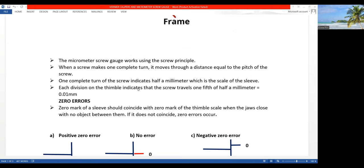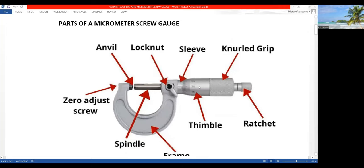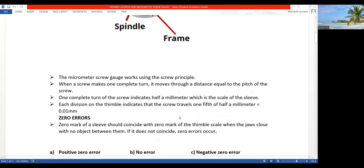Its division on the thimble. On the thimble, let me take you back here. Which one is the thimble? It's this one here. Its division on the thimble indicates that the screw travels one-fiftieth of half a millimeter, which is equal to 0.01 millimeter. That's actually the accuracy of the micrometer screw gauge.